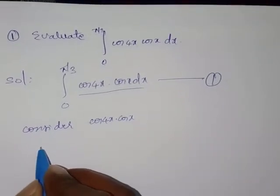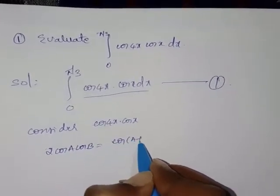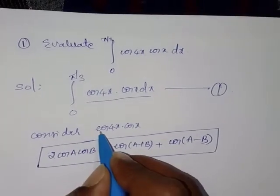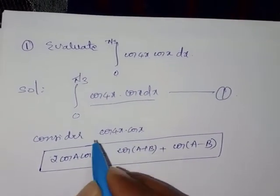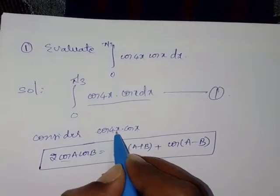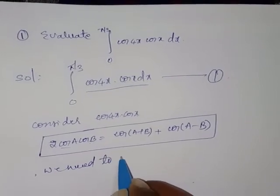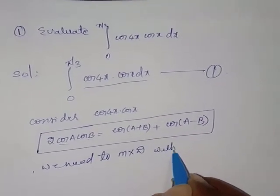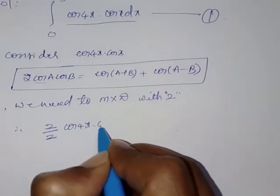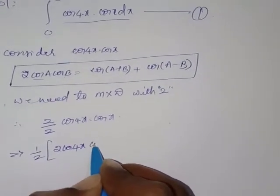We know the formula: 2·cos(A)·cos(B) = cos(A+B) + cos(A−B). But in the integrand we only have cos(4x)·cos(x), not multiplied by 2. So we need to multiply and divide by 2. Therefore it becomes (2/2)·cos(4x)·cos(x), which is simply (1/2) · 2·cos(4x)·cos(x).